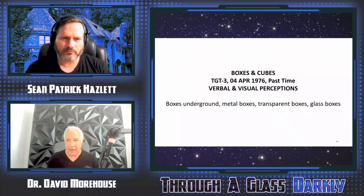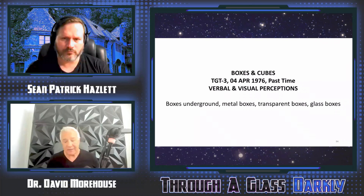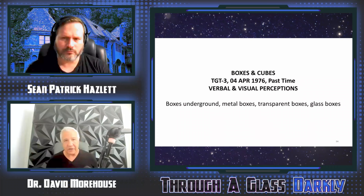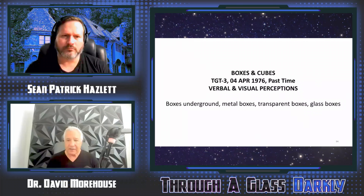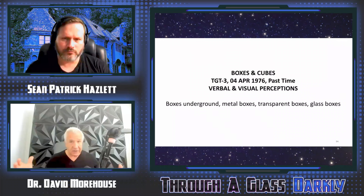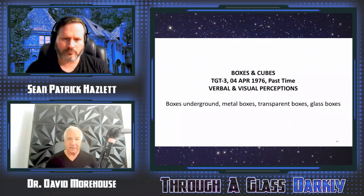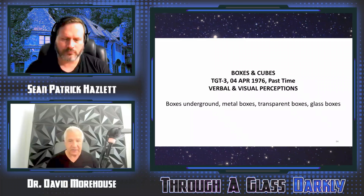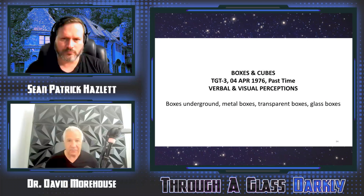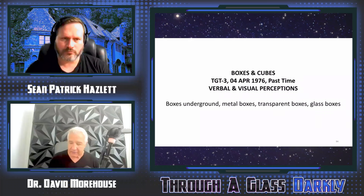One category was boxes underground — metal boxes, transparent boxes, glass boxes — because that seemed to be part of the high strangeness of this place. There were boxes emitting high energies with life forms in them. After getting feedback from Katie and the crew, we learned these boxes often stopped people right in their tracks: they couldn't move forward or backward, couldn't think, and couldn't communicate.